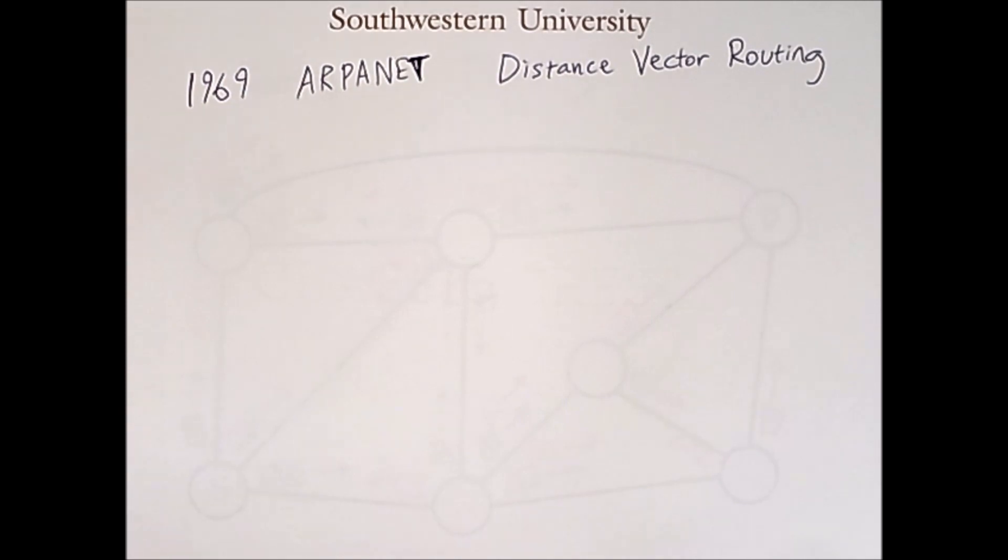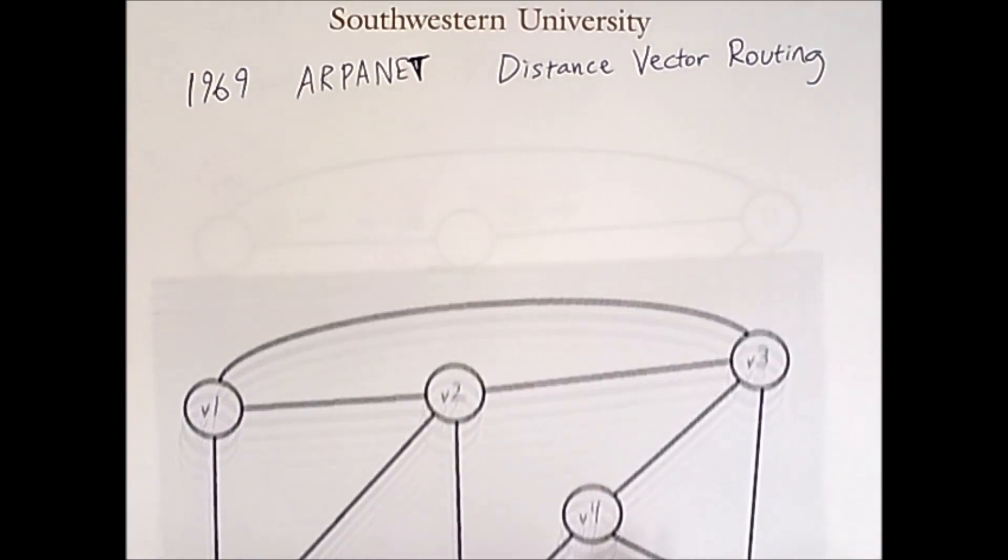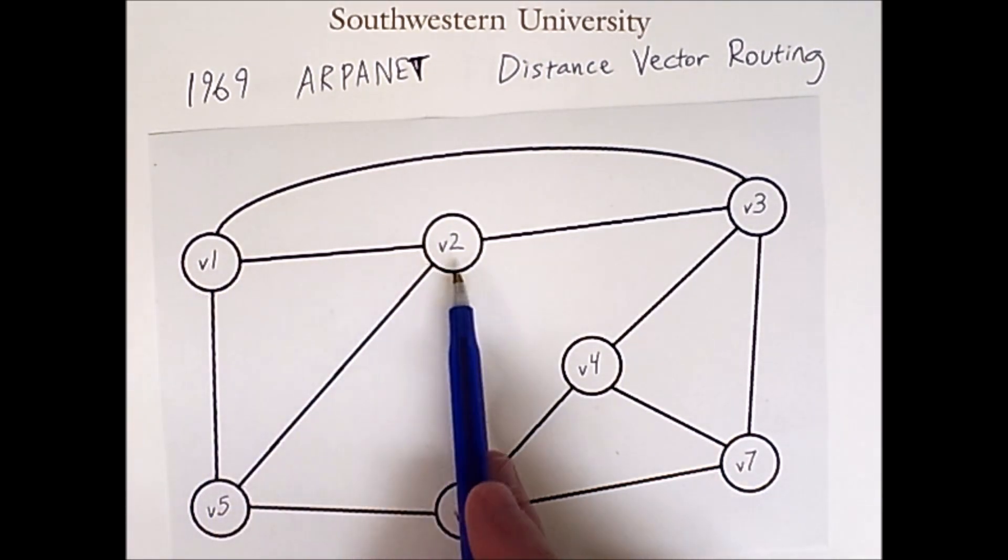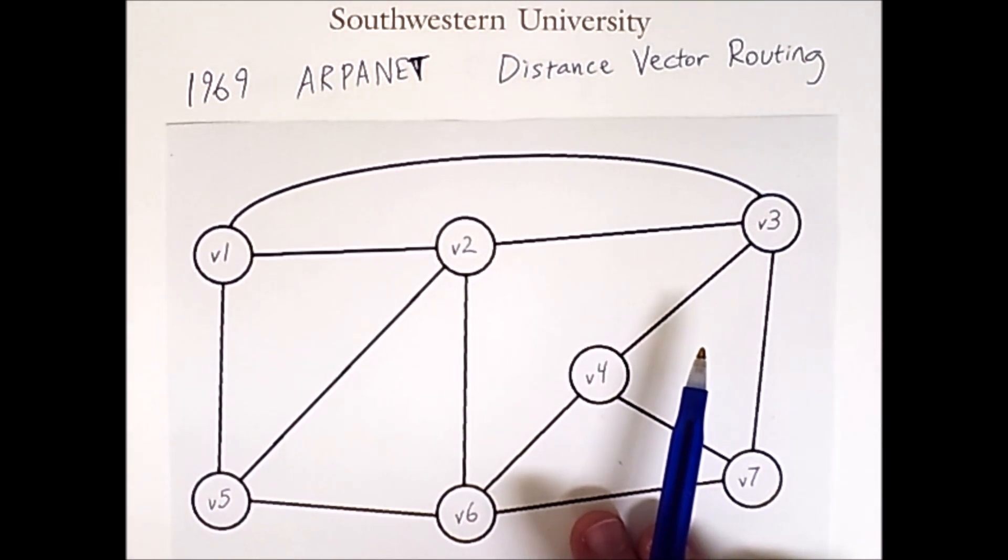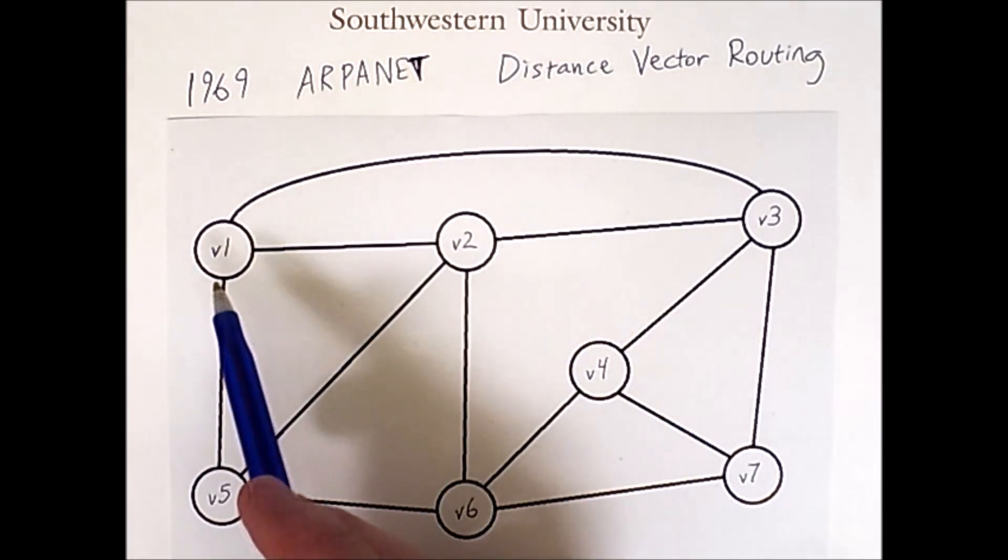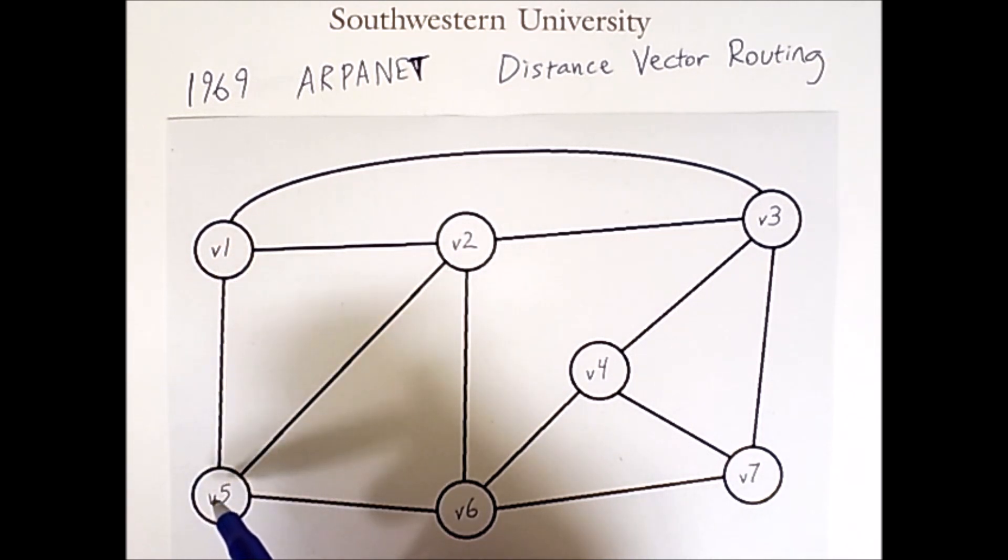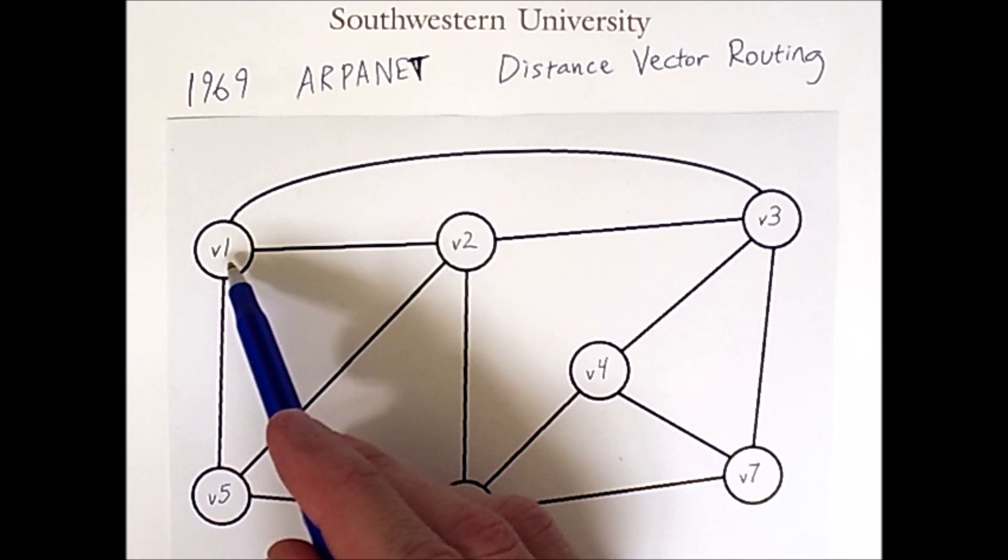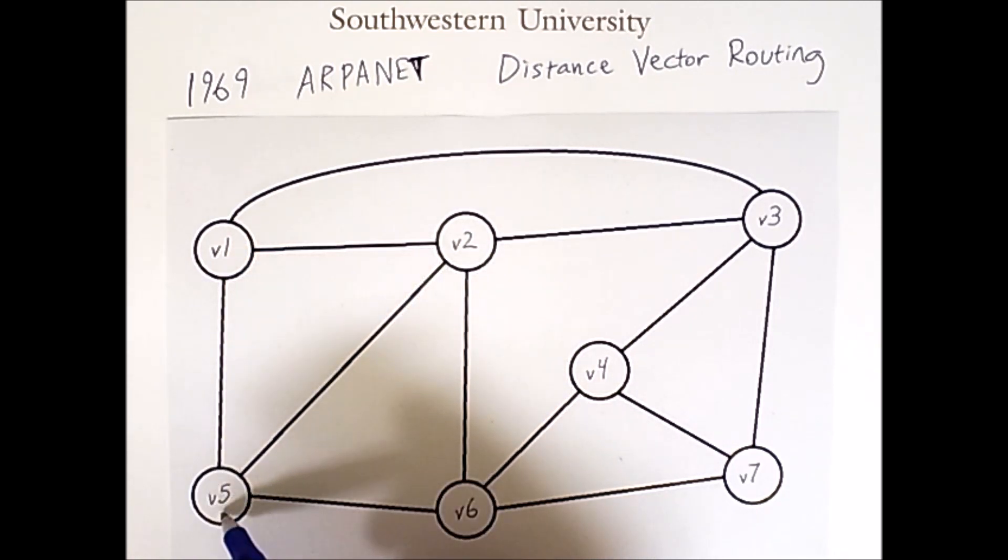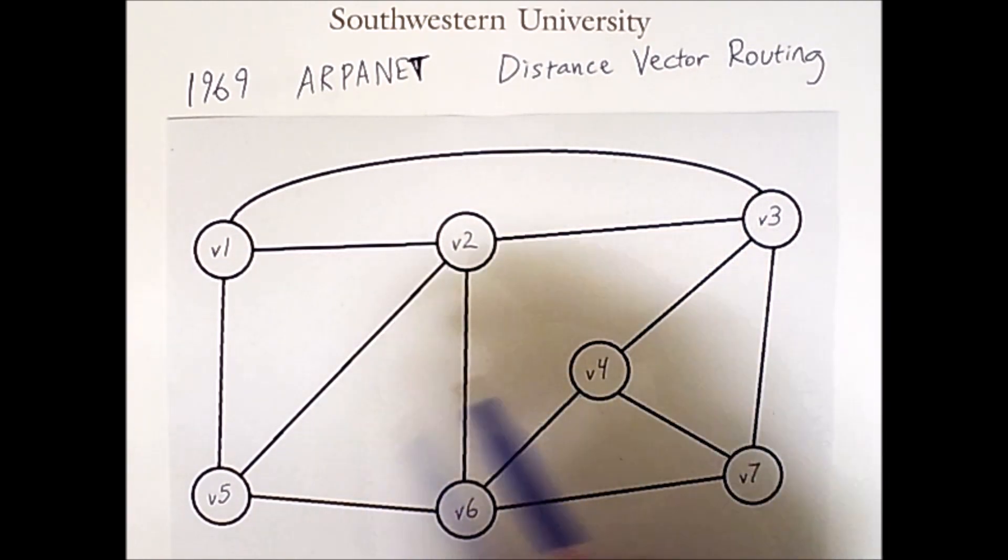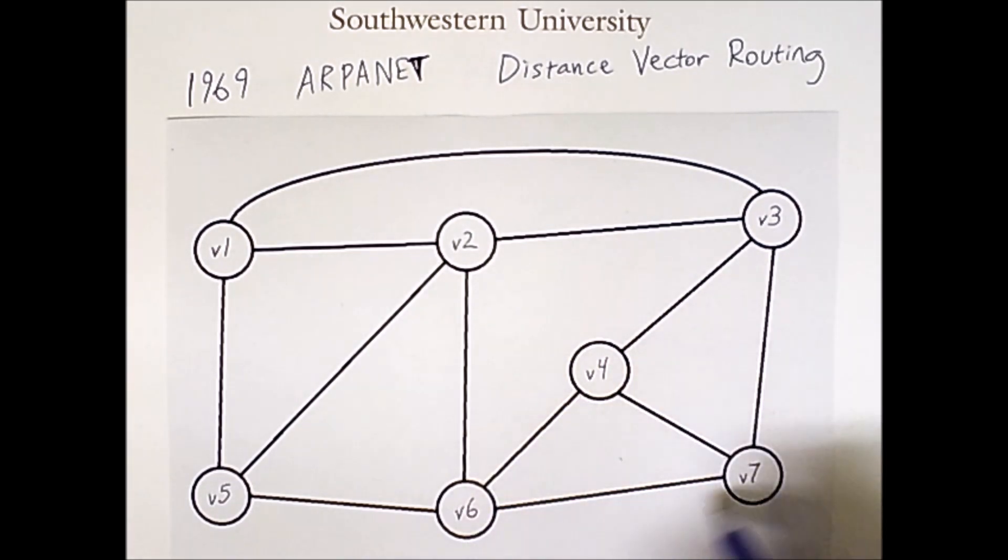Specifically, if we take a network like this, which has all of the nodes labeled vertex 1, vertex 2, and so on, then each node only needs to know a little bit of information about its immediate neighbors. So for example, node 1 or vertex 1 only needs some information from vertex 5, vertex 2, and vertex 3. It doesn't have to know anything about the connectivity of the network or about any of these other nodes.